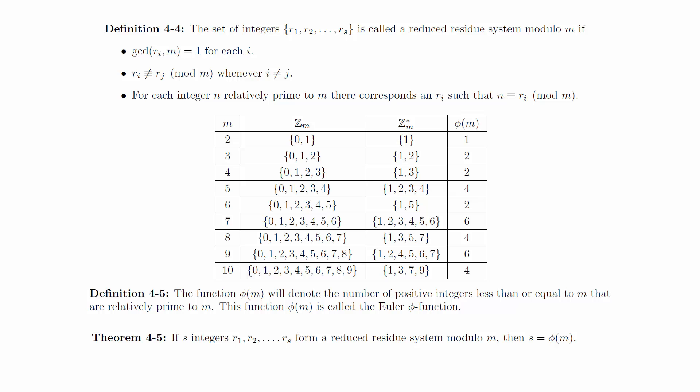Theorem. If s integers r1, r2 up to rs form a reduced residue system modulo m, then s equals phi of m. The proof of this theorem is not very different from the previous proof.